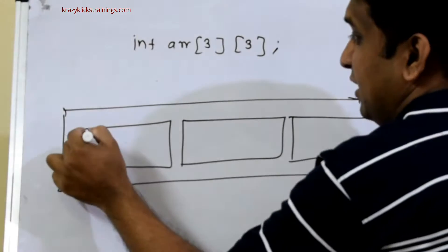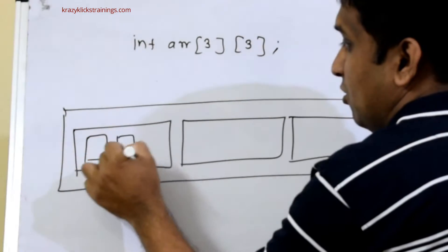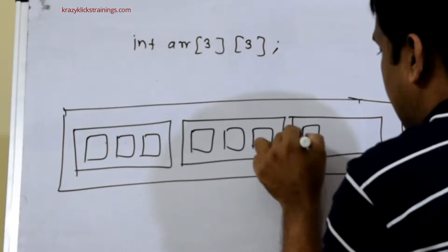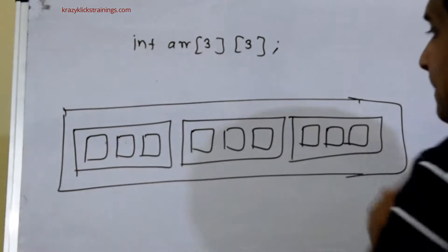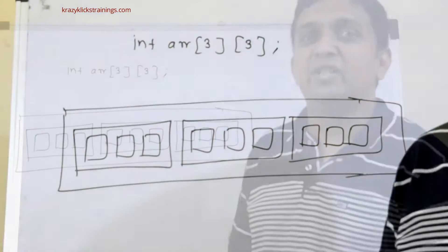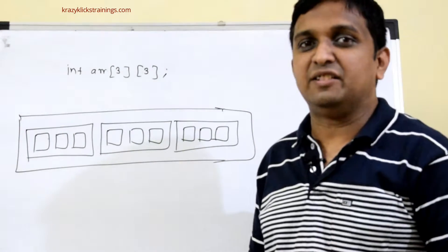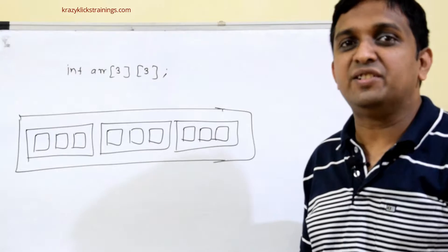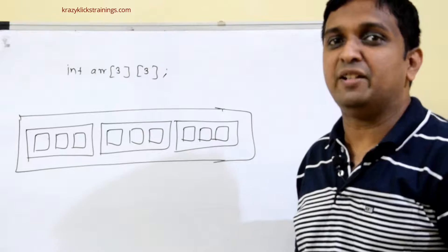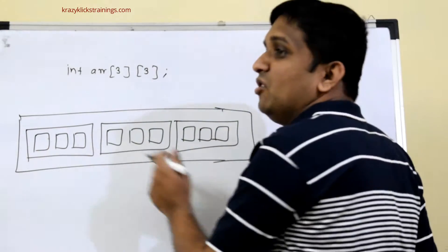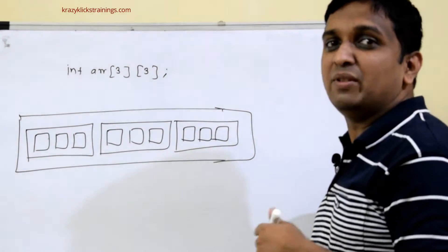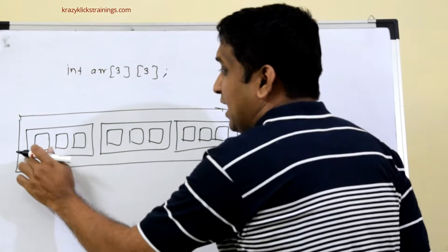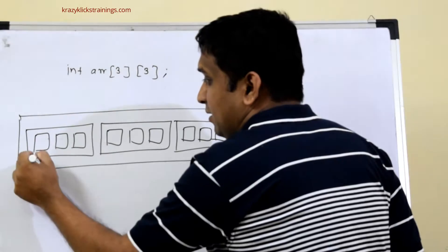Each 1D array has 3 integers, so I will draw 3 boxes in each of the 1D arrays. Now when I say ARR, the name of the array is nothing but the base address of the array and it always points to the first element. For a 1D array one element is one integer, but for a 2D array one element is one 1D array. So the first element will be the first 1D array.